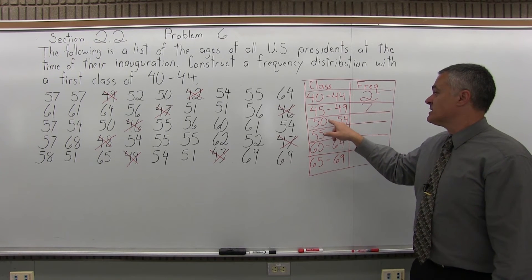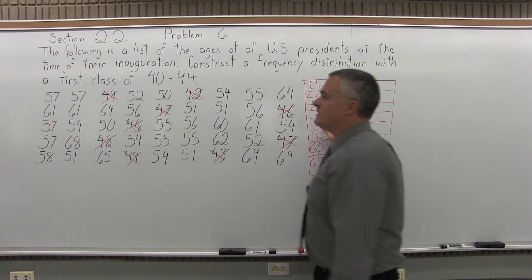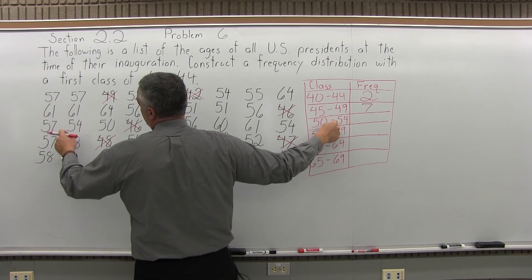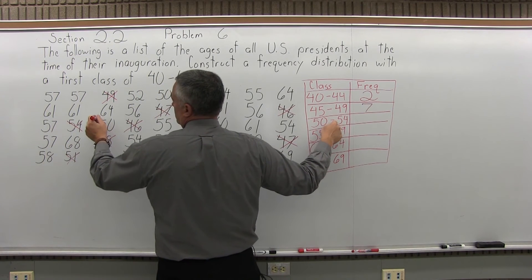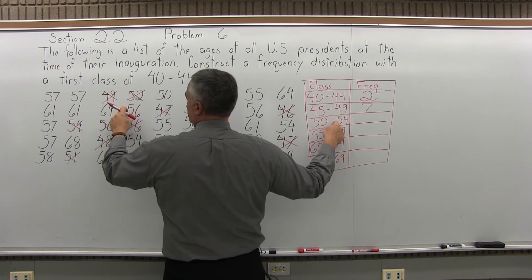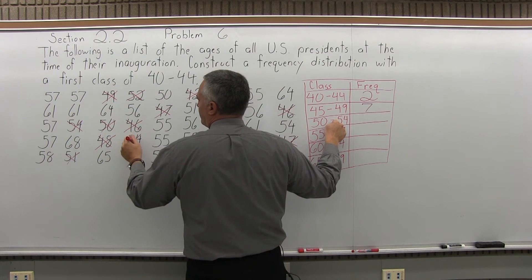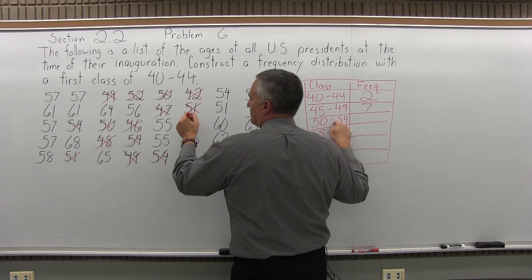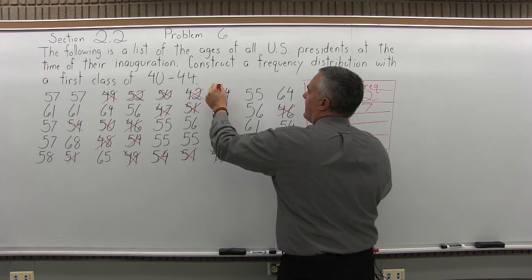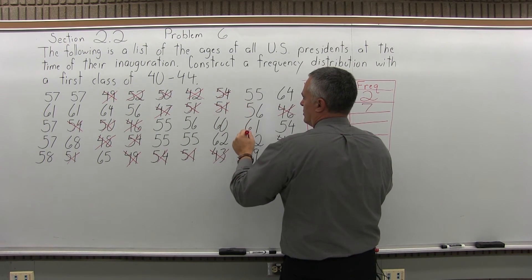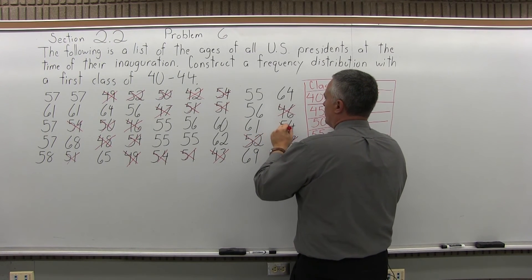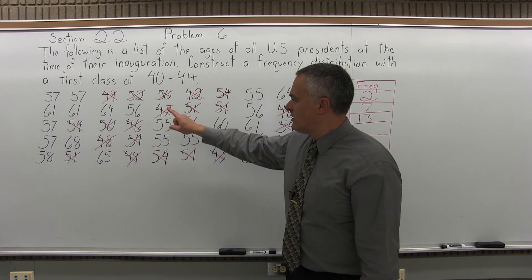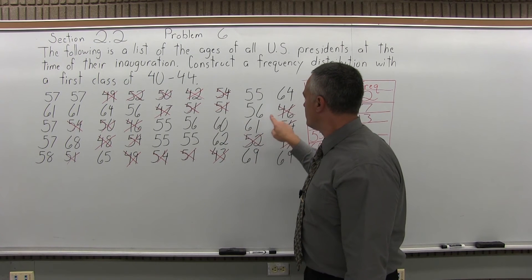The next class: how many presidents were between 50 and 54 years old when they were inaugurated? Basically, anyone left not crossed out that's 54 or younger. Going through the remaining values, I count 13. A quick check — anyone left that's not crossed out and 54 or younger? A few are close but a little too big. So I think it's 13.